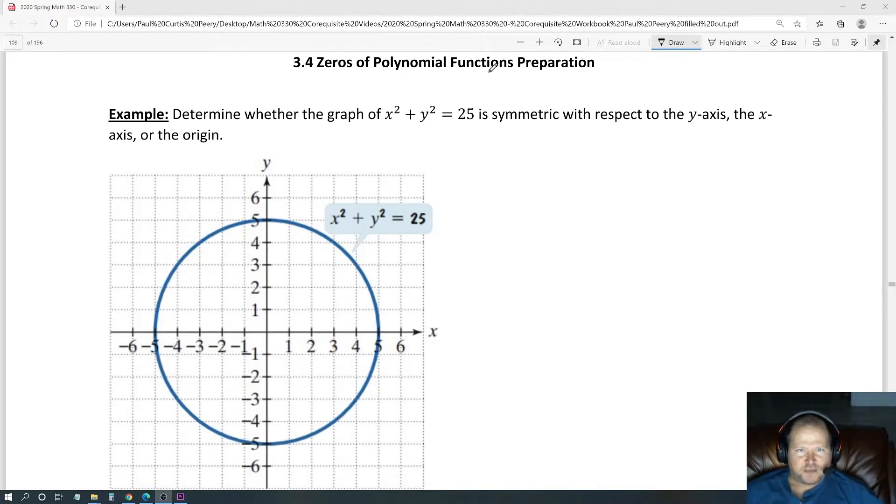3.4 zeros of polynomial functions preparation. Example: Determine whether the graph of x squared plus y squared equals 25 is symmetric with respect to the y-axis, the x-axis, or the origin.